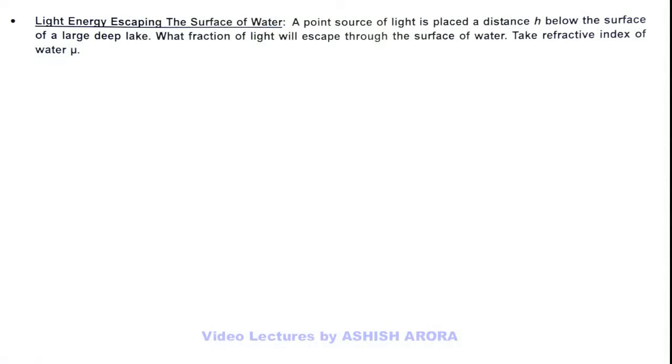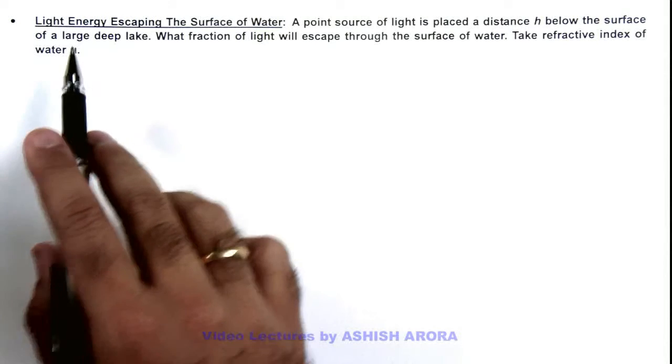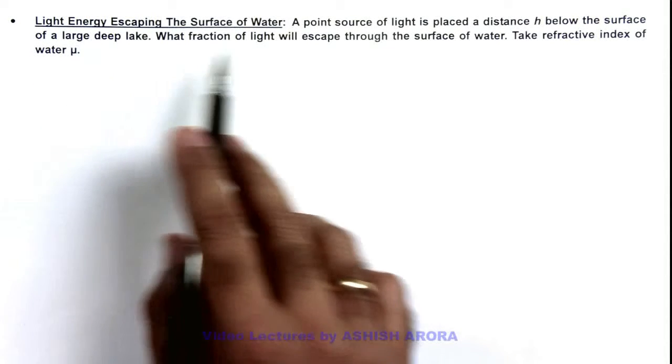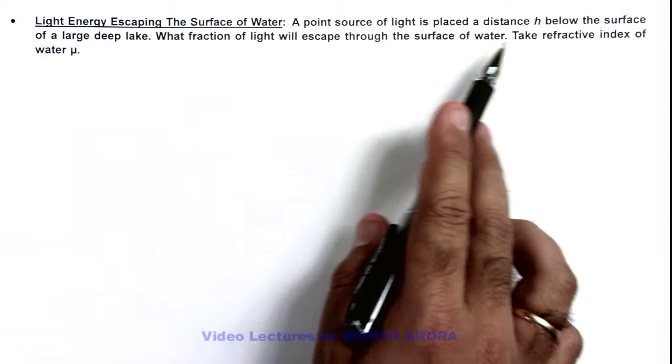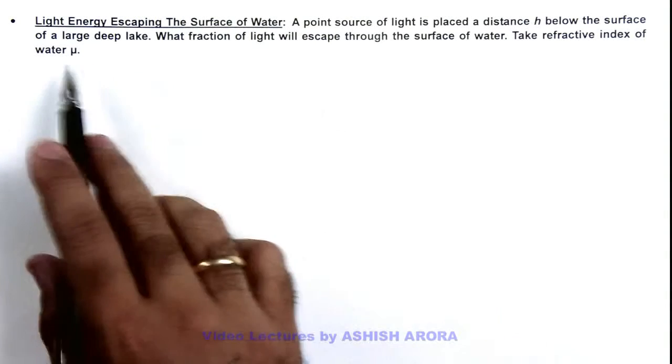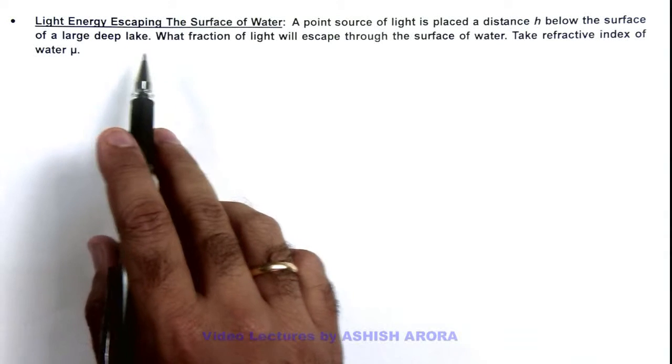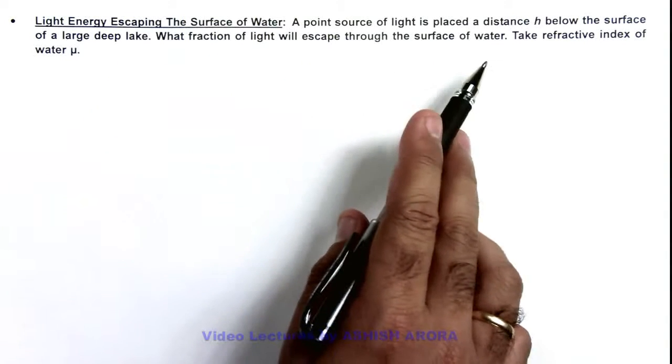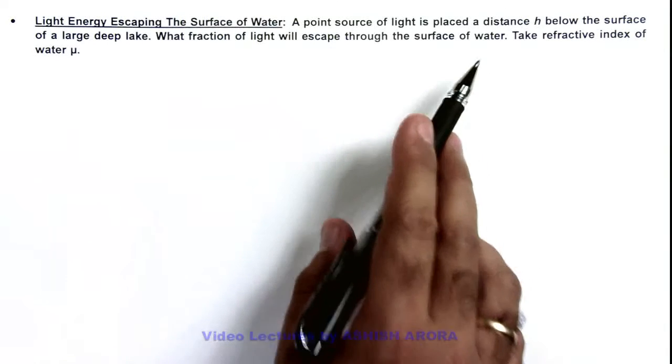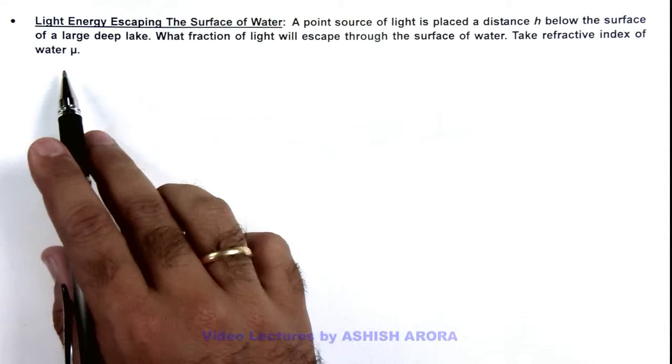In this illustration we'll discuss the light energy escaping the surface of water. Here we are given that a point source of light is placed at a distance h below the surface of a large deep lake, and it is asking what fraction of light will escape through the surface of water. We are required to take the refractive index of water as mu.